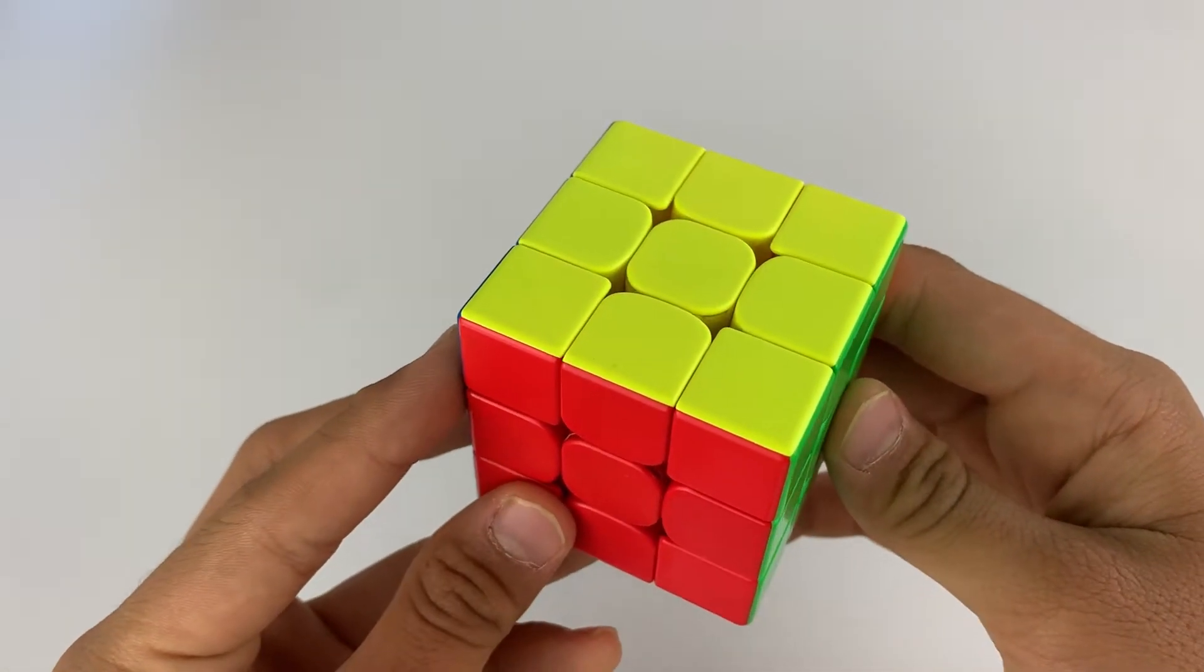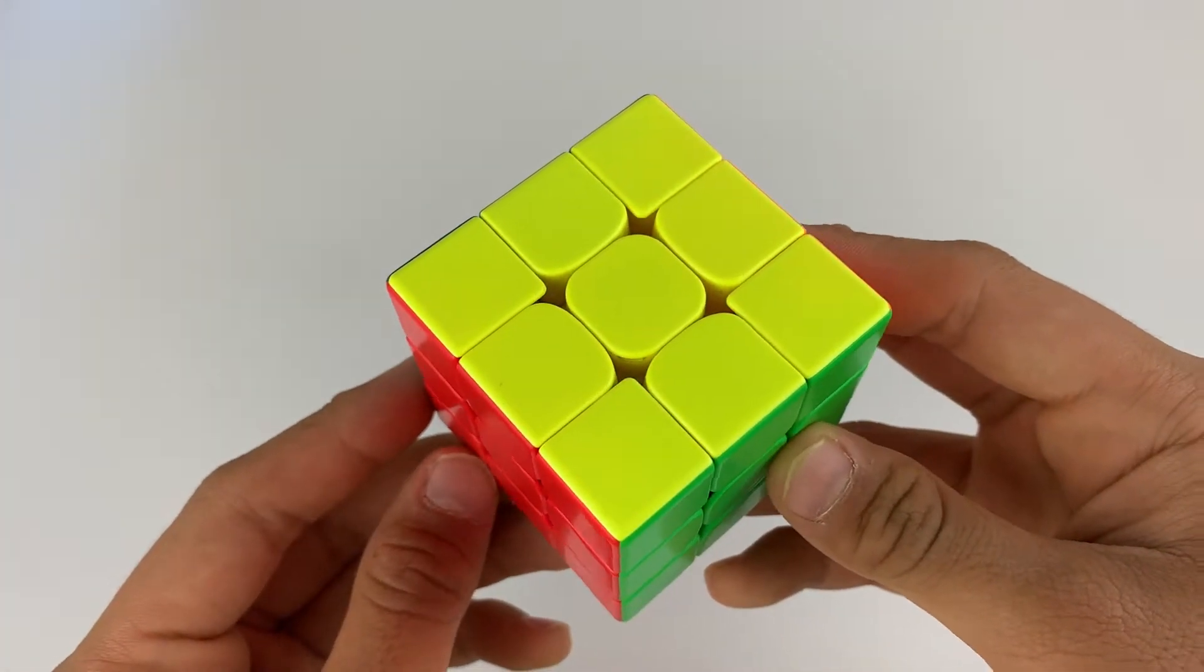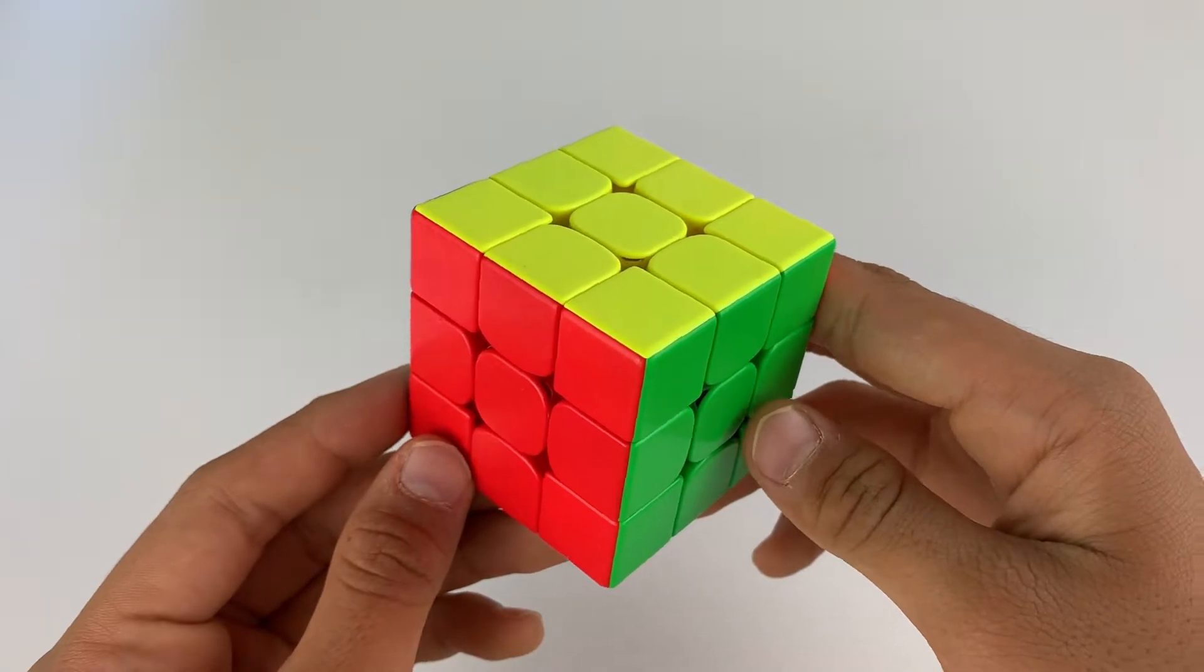I have a two-look OLL tutorial and it's the link in the description, but if you want to check out a two-look PLL tutorial, I have another link in the description for J-perm.